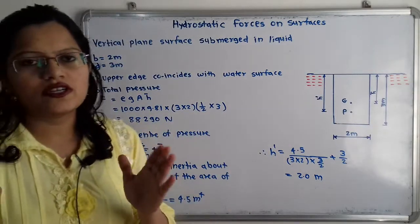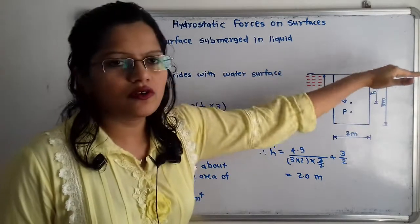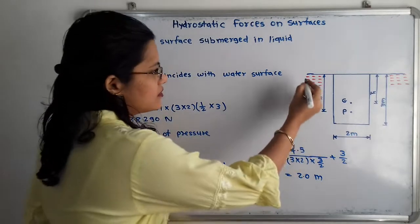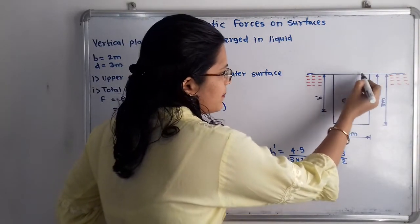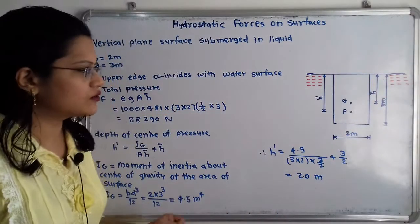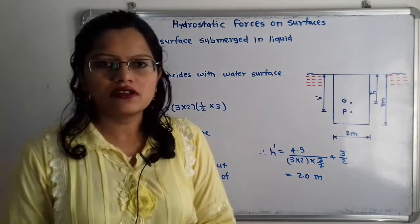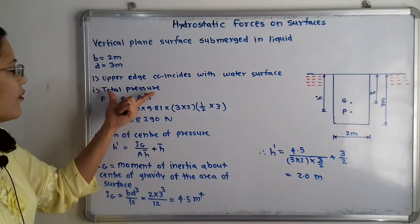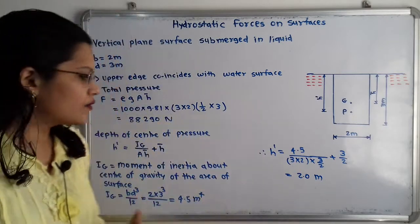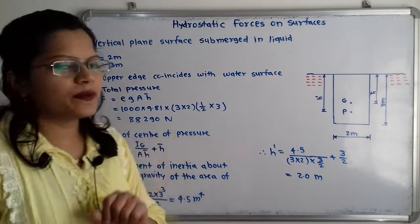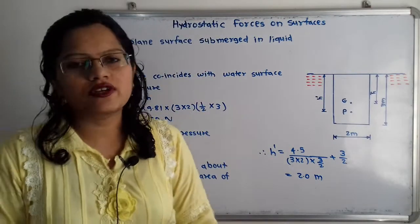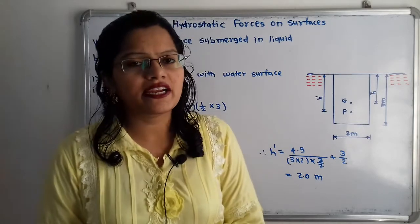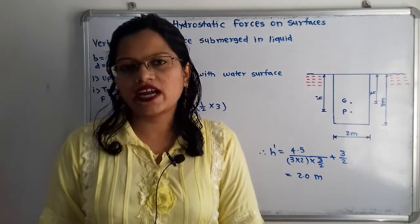There are two cases. In the first case, the upper edge is horizontal and coincides with the water surface. We show the water surface and along it the upper edge in horizontal form. The question asks us to find the total pressure and the center of pressure. Total pressure is the force exerted by the static fluid on the surface when the surface is in contact with the fluid — here the fluid is water.